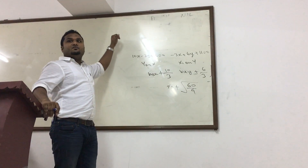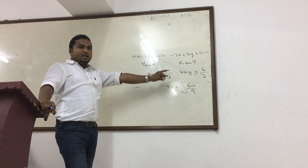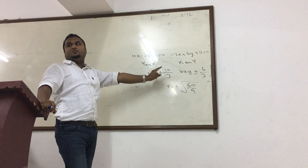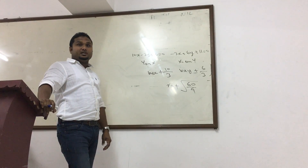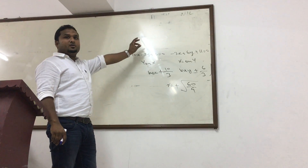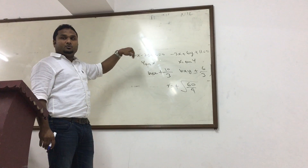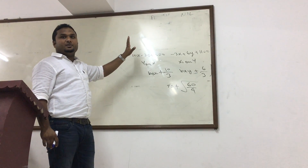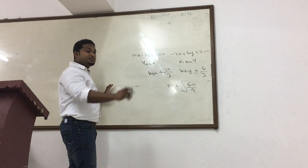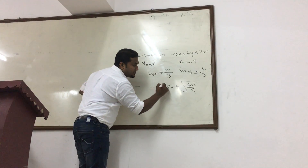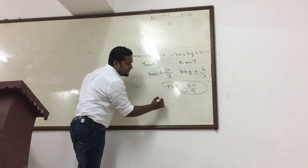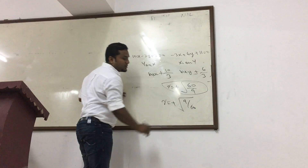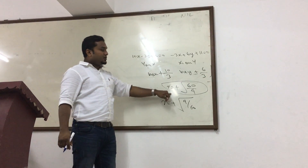The answer of the correlation coefficient cannot be greater than 1. Our calculation gives 10 into 6 equals 60, divided by 3 into 3 equals 9, so we get root of 60 by 9, which is greater than 1. So our assumption is wrong. We do not redo the question from the beginning — the answer is simply the reciprocal, giving us root of 9 by 60.